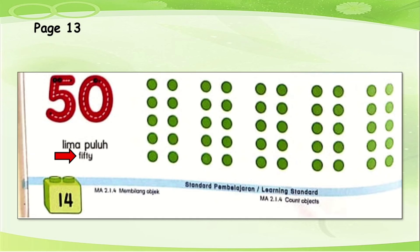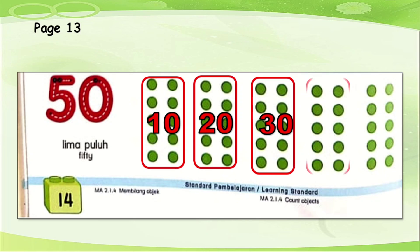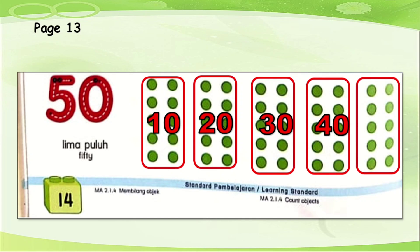Now let's see the circles there. This one is quite easy because you can already see there. We have 1, 2, 3, 4, 5 groups of circles. 1 group will be 10. So 5 groups — let's count together: 10, 20, 30, 40, and 50. Very good. All the groups have 10 circles, so we don't have anything separately. We have 5 groups of 10 circles, so altogether will be 50. Lima pulo.